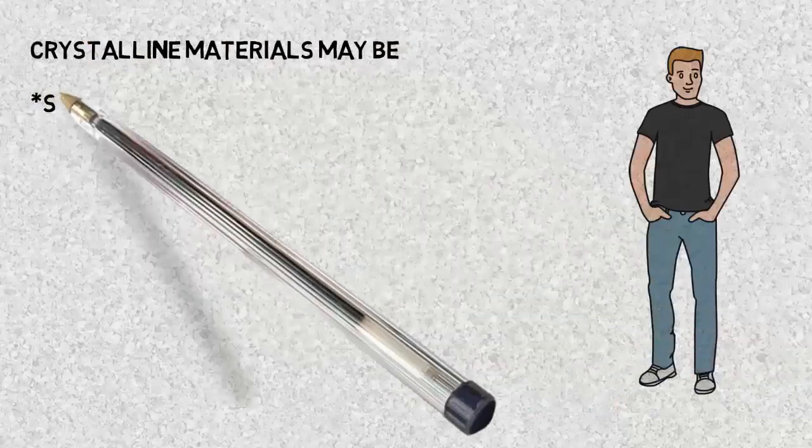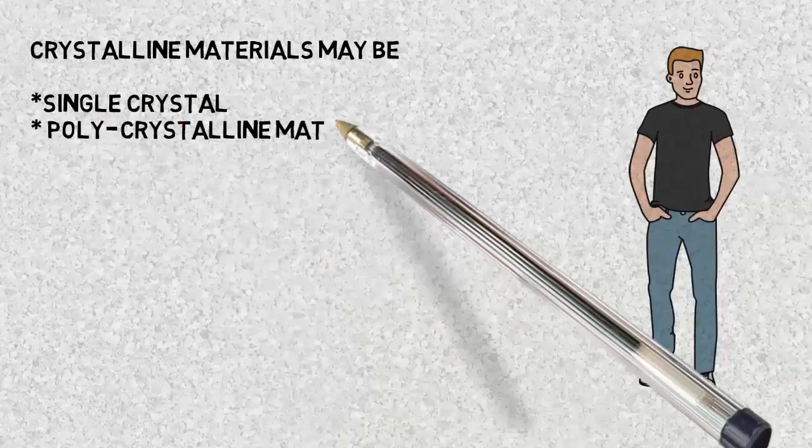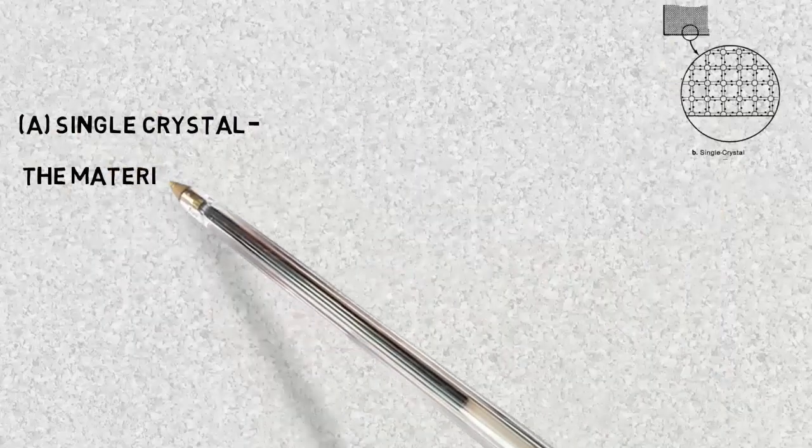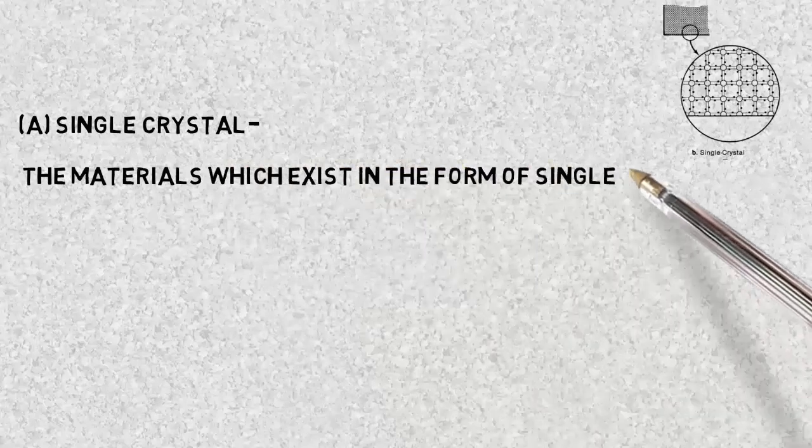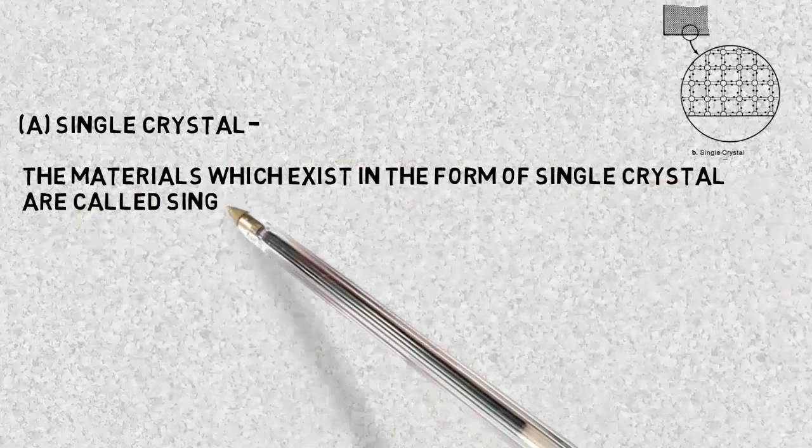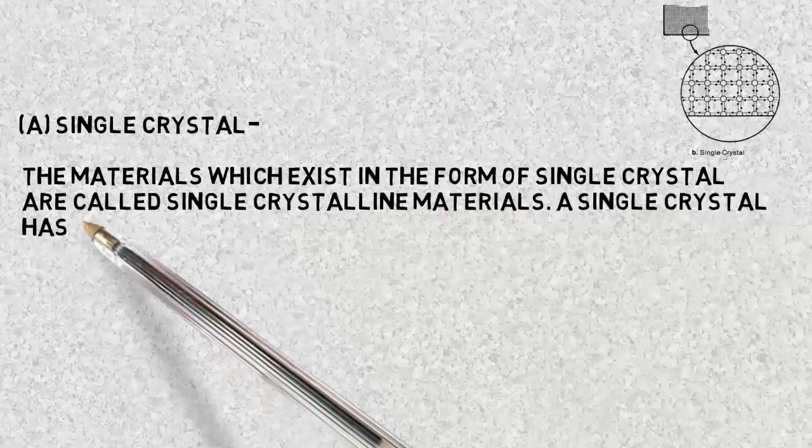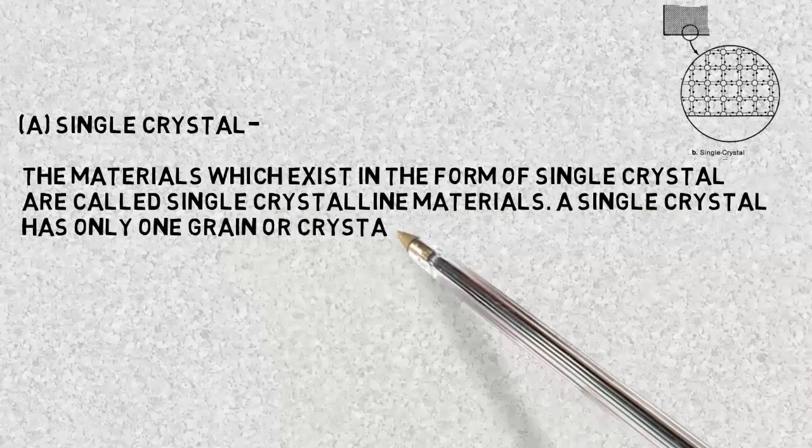These may be of two types: single crystal and polycrystalline materials. First is single crystalline materials. The materials which exist in form of single crystal are called single crystalline materials. A single crystal has only one grain and hence has no grain boundary.